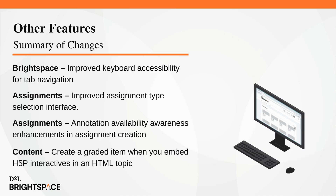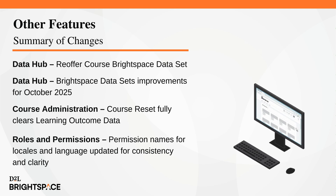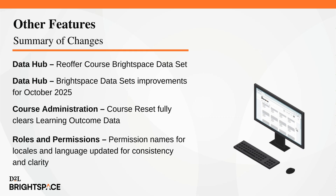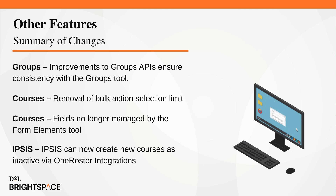When embedding H5P interactives in an HTML topic, instructors can now choose whether to create a gradebook item, giving them more control over course setup and grading. DataHub has a new Brightspace dataset, Re-Offer Course, to track the creation and distribution of re-offered courses. DataHub is also delivering improvements to existing Brightspace datasets, giving administrators faster access to richer data for reporting and analysis. Course Reset now deletes learning outcomes data, allowing course administrators and instructional designers to confidently reset a course and start fresh. Some permission names for locales and language management are updated to better demonstrate what the permissions allow users to do.